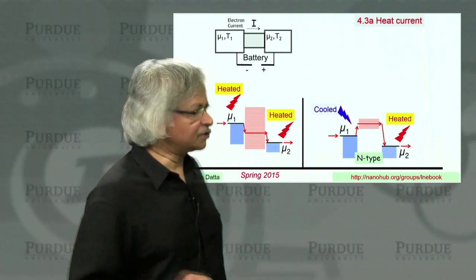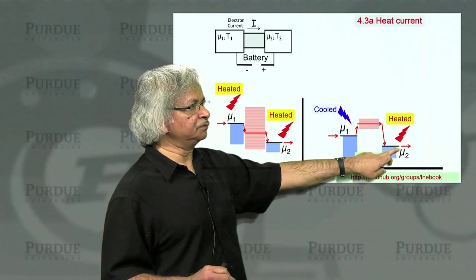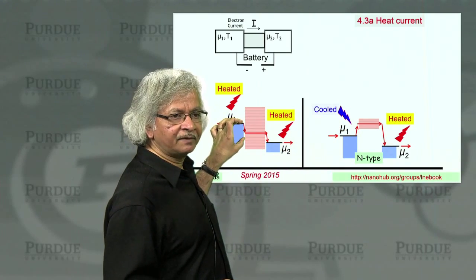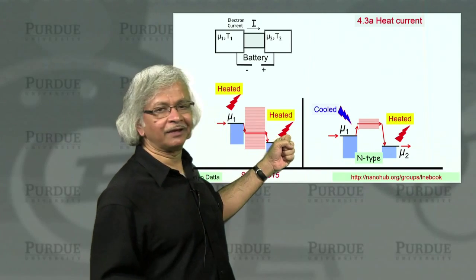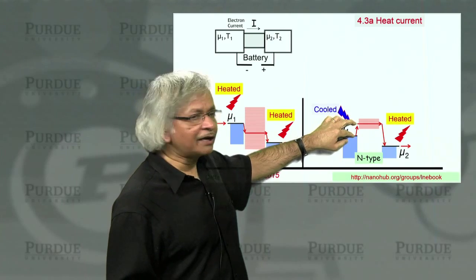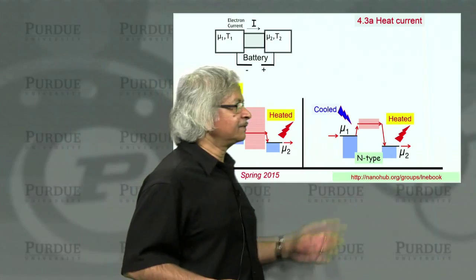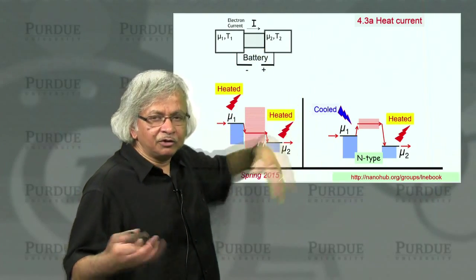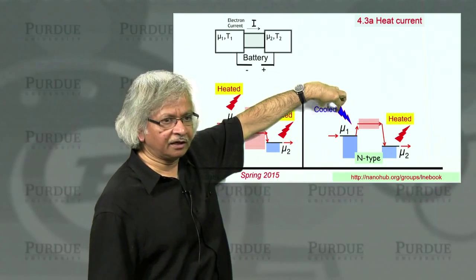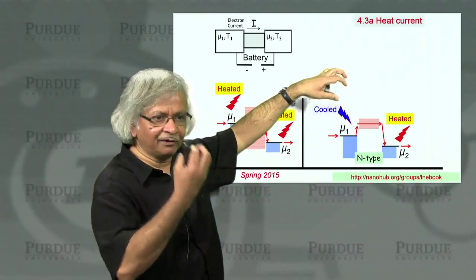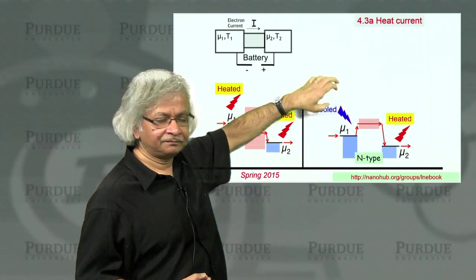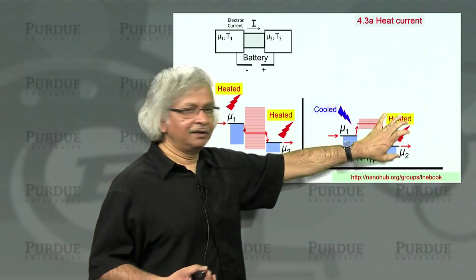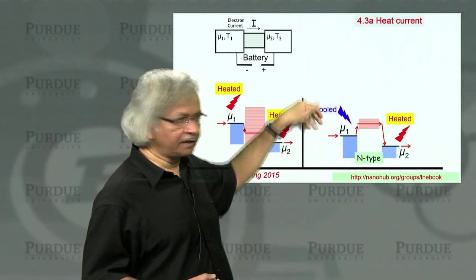Overall, what happened is an electron came in at mu 1, left at mu 2, which means it got rid of an amount of energy equal to mu 1 minus mu 2, exactly the same as before. Except that in this picture, in this contact, you actually absorb heat from it, which means that if that contact is to be maintained at a fixed temperature, heat would come in from the surroundings. You could use this to cool something — put your coke on top of that contact, and the contact would take heat from the drink, and the drink would get cooled down. So this is something you could use for refrigeration: one contact is getting cooled every time an electron goes through.